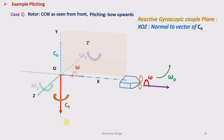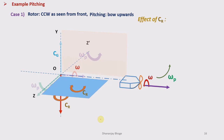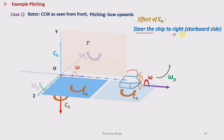Now let us identify the plane in which vector C_r acts. C_r acts in the plane perpendicular to its vector. The plane perpendicular to C_r is plane XOZ, so C_r — the reactive couple — acts in the horizontal plane XOZ. The effect of C_r on the ship will be to turn the bow towards the starboard side, that is to the right. So its effect is to steer the ship to the right or starboard side.